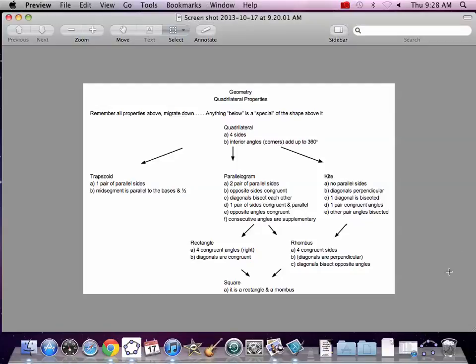We are working with quadrilaterals. So here are the quadrilateral properties. We have quadrilateral as our basic shape, we have trapezoid, parallelogram, kite, rectangle, rhombus, and square.